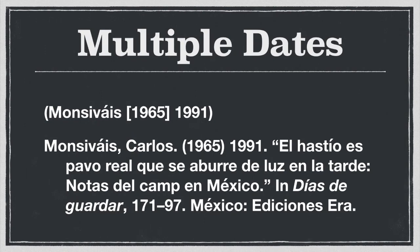For example, here I have a source from the Mexican writer Carlos Monsiváis, and if you look at the parenthetical citation, you can see it says 1965 in square brackets, followed by 1991. These are in Chicago author-date format. The reason for this is very simple: the first date was the original publication date for this text, and the second date refers to the publication of the edition that I myself am citing.